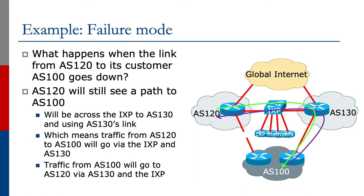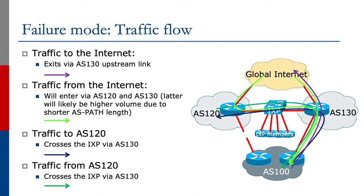Traffic from AS120 to AS100 crosses the Exchange Point and AS130. Traffic from AS100 will go to AS120 via AS130 and the Exchange Point. Looking at the whole traffic flow including traffic from the global Internet, we will see that traffic to the Internet will exit via AS130's upstream link, going from AS100 to AS130 and straight out to the global Internet. Traffic from the Internet will enter via AS120 and AS130, but the latter path will likely be higher volume due to the shorter AS path length visible on the global Internet.